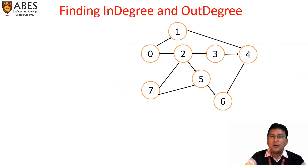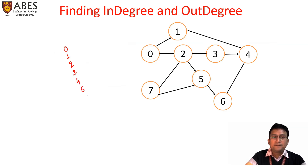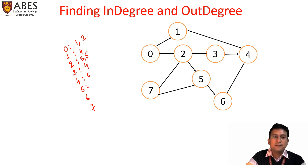To find the indegree and outdegree, we need to build the adjacency list of the given graph. From zero, connections are one and two. From one, connection is only four. From two, connections are three and five. From three, connection is only four. From four, connection is only six. From five, connection is only six. From six, there are no outgoing edges, so this will be empty.